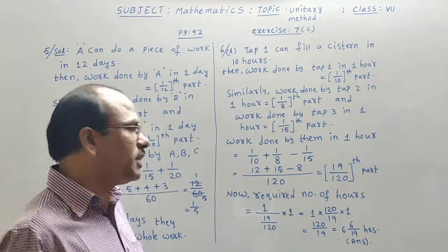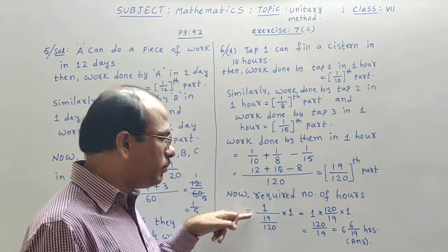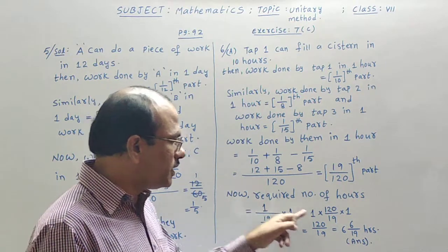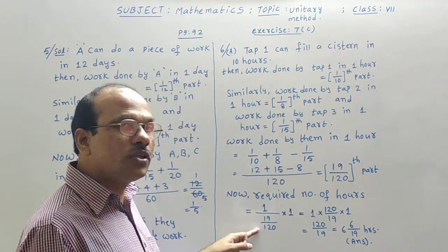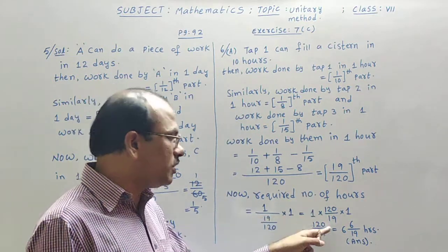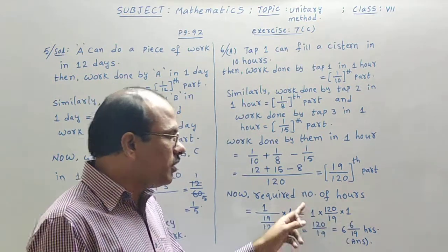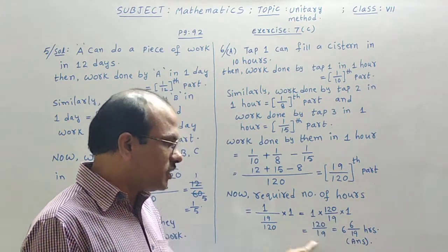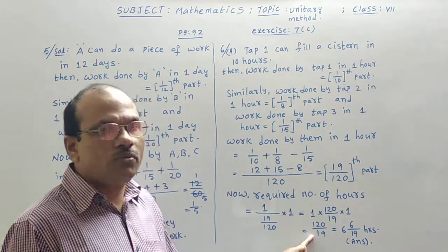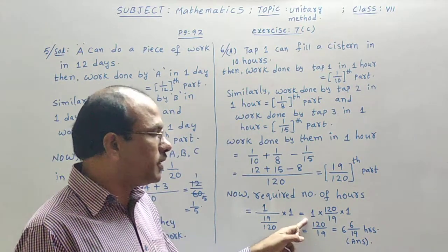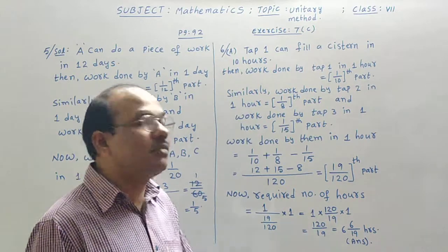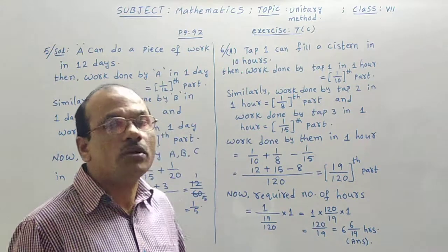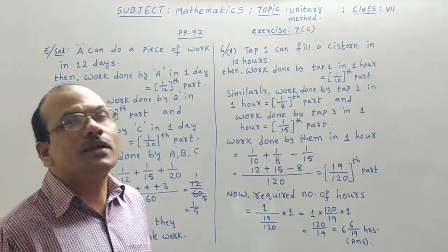Okay now, whenever more time is required, more part by less part into one hour of time. That one is written. This 19 by 120 change into its reciprocal 120 by 19 into one that is written. One into one is one only. One into something is that something only. Since there is no common table, we cannot cancel and numerator is larger. So, it should be converted into mixed refraction. Six, six by 19 hours of time required to fill the cistern.